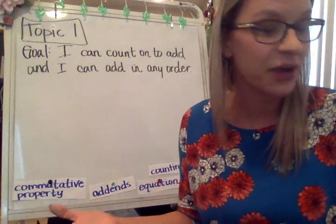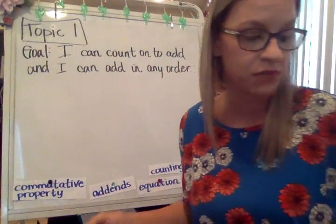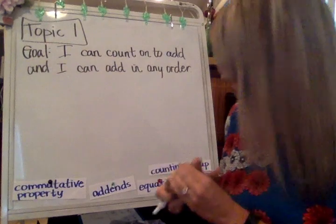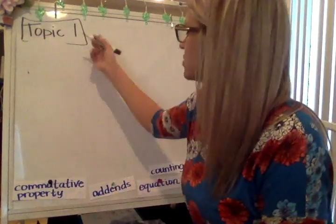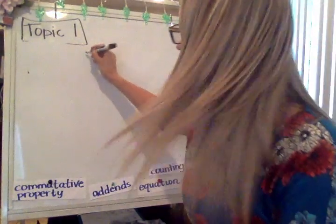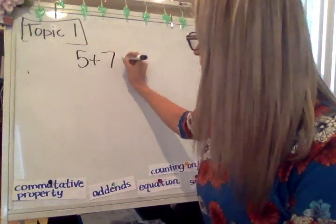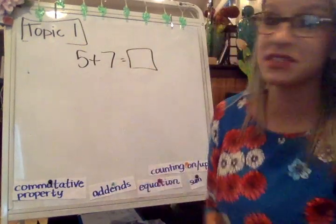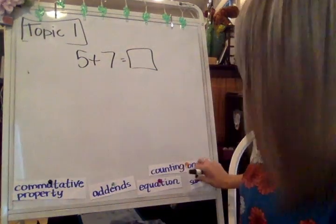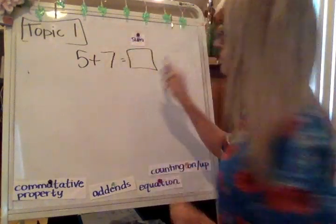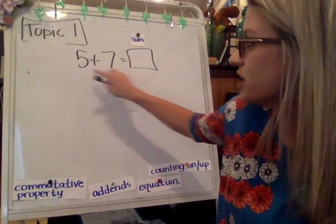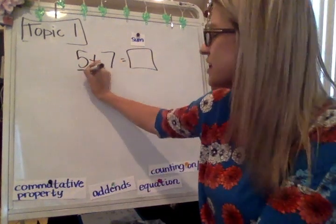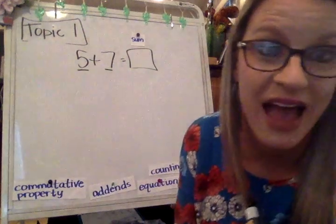So I want to start with a few equations. The first equation that we're going to talk about is 5 plus 7 and we want to know what the sum of 5 plus 7 is. Remember, the sum is the answer to an addition equation. This is the equation, and then the numbers 5 and 7 are called the addends.